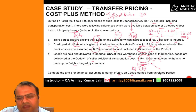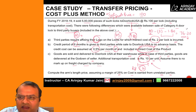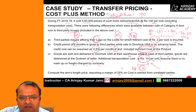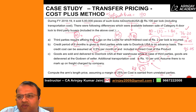Now compute the arm's length price, assuming a margin of 25% on cost as earned from unrelated parties. The comparable cost is 76.20. A 25% margin on 76.20 gives 19.05. Adding the two gives 95.05. So this is the price I should be charging from my related party.